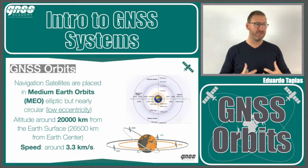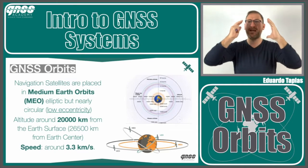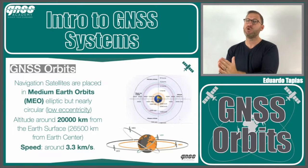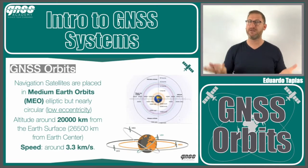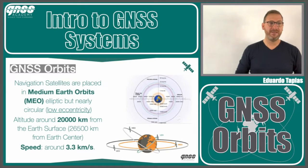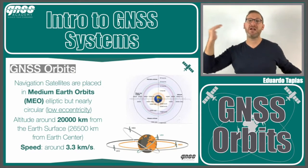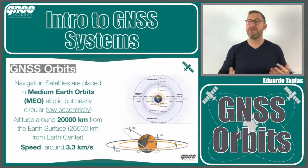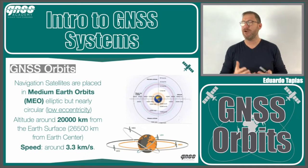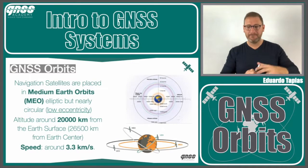After this training, it's very important for you to acquire at least the order of magnitudes of everything — that will be a real progress. These satellites at 20,000 kilometers are orbiting more or less at 3.3 kilometers per second. This is for the MEO orbit satellite.